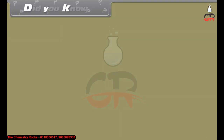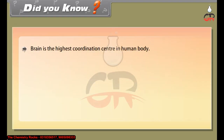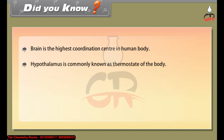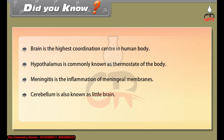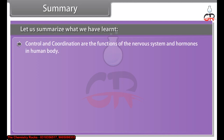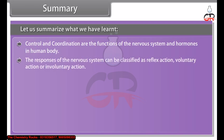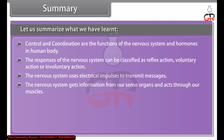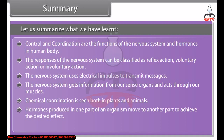The brain is the highest coordination center in the human body. The hypothalamus is commonly known as the thermostat of the body. Meningitis is the inflammation of meningeal membranes. The cerebellum is also known as the little brain. To summarize: control and coordination are the functions of the nervous system and hormones in the human body. The responses of the nervous system can be classified as reflex action, voluntary action, or involuntary action. The nervous system uses electrical impulses to transmit messages and gets information from sense organs, acting through our muscles. Chemical coordination is seen both in plants and animals. Hormones produced in one part of an organism move to another part to achieve the desired effect, and a feedback mechanism regulates the action of hormones.